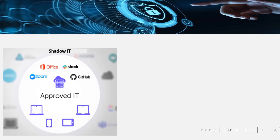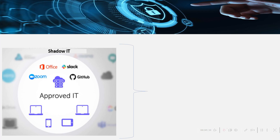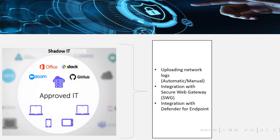Cloud discovery can be done by forwarding logs from your network using Defender for Cloud Apps, either manually or by automatically uploading logs from your network. Another method is by integrating with a Secure Web Gateway. There are some SWGs you can integrate with MDCA by default. Next is MDCA integration with Defender for Endpoint, which is natively done. We'll discuss this in a lot more detail in our upcoming sessions.